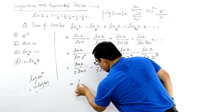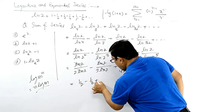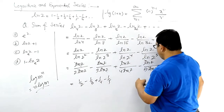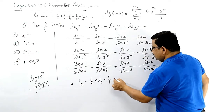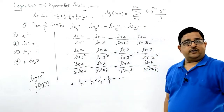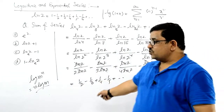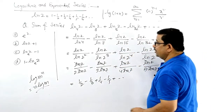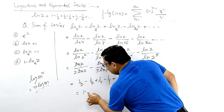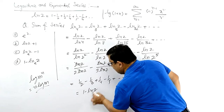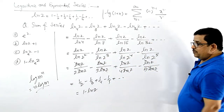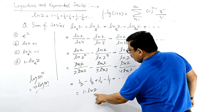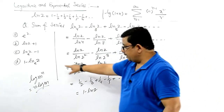क्या बचेगा: 1/2 minus 1/3 plus 1/4 minus 1/5 plus इस तरह की value बनेगी। और उसको हम कई बार लिख चुके हैं, हमें पता है कि इसकी value कितनी होती है — इसकी value होती है 1 minus ln2। या इसको आप चाहें तो लिख सकते हैं: 1 minus ln2।